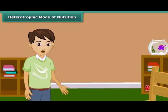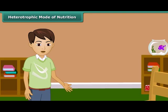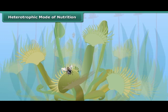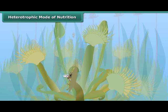Now let us know about those plants which do not have chlorophyll and cannot synthesize their food on their own. Just think about how do they survive and from where do they derive nutrients. As we have already learnt, these plants derive food from other plants and animals, and this type of mode of nutrition is called heterotrophic mode of nutrition. The plants in which this kind of mode of nutrition is found are known as heterotrophs.